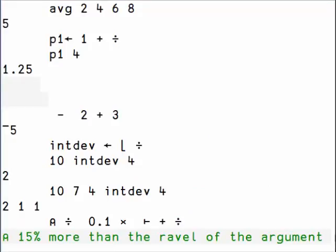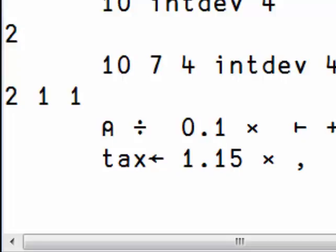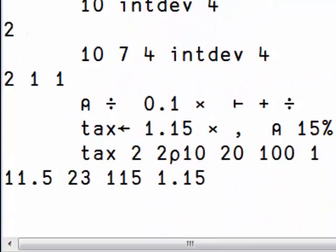Here are a few examples of trains. We want to add 15% to the ravel of the argument. It is simply 1.15 times the ravel. We ravel the matrix, multiply by 1.15, and here is the result.